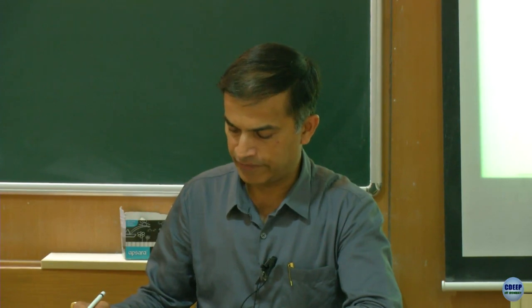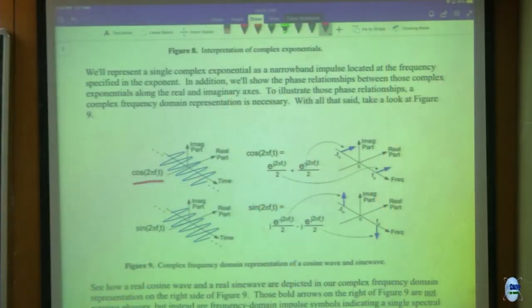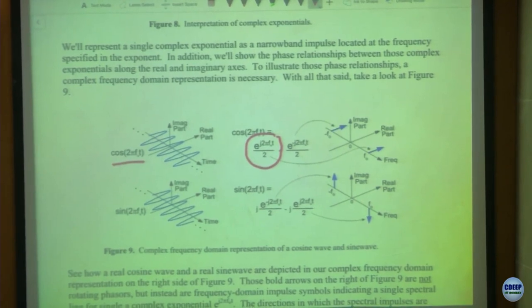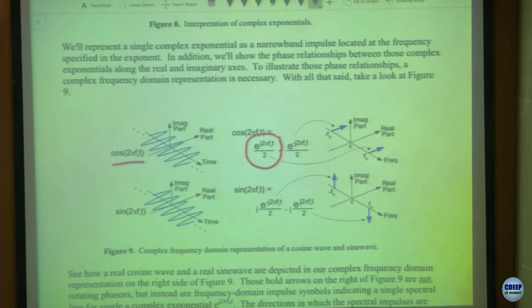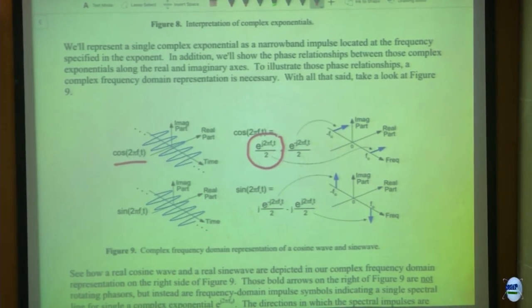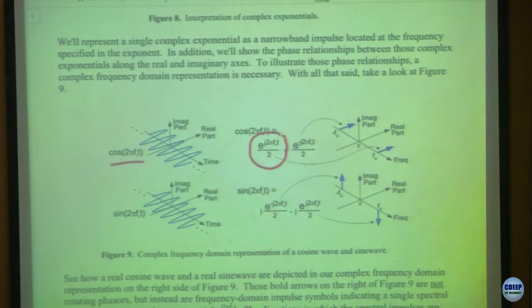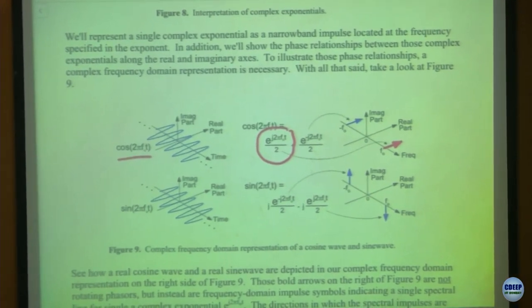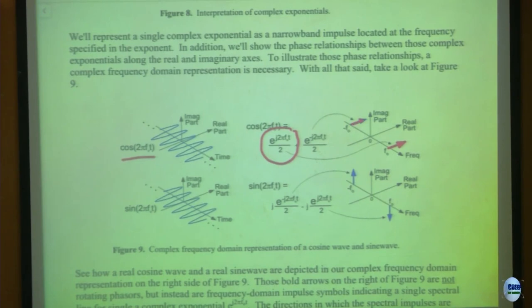Now let us look at this in the frequency domain. Cos(2*pi*f0*t) equals (e^(j*2*pi*f0*t) + e^(-j*2*pi*f0*t)) / 2. E to the power j*2*pi*f0 gives an impulse at f0, and the minus version gives another impulse at minus f0. The flat plane is the real (in-phase) plane and vertical is imaginary (quadrature). These are not phasors - in time domain we rotate and project, but in frequency domain it is a delta function at one frequency.